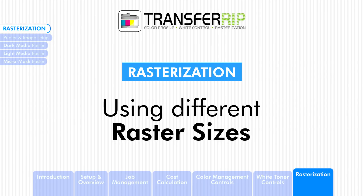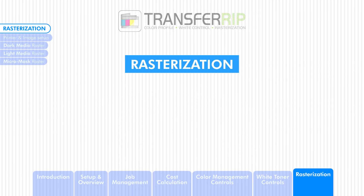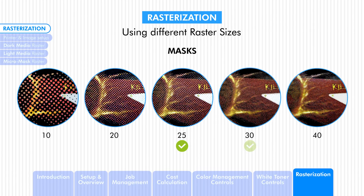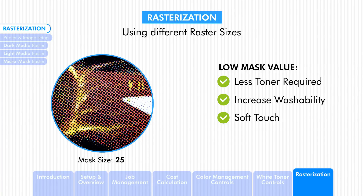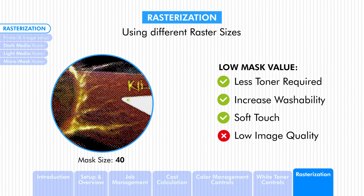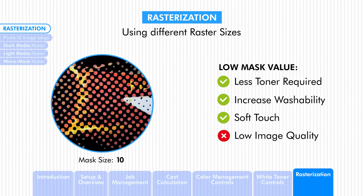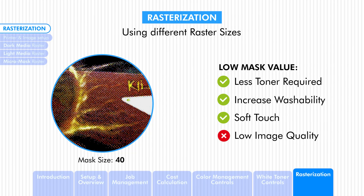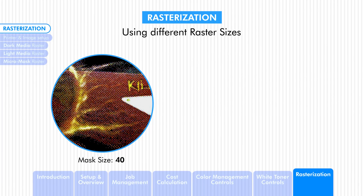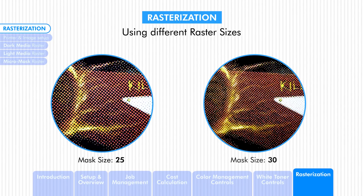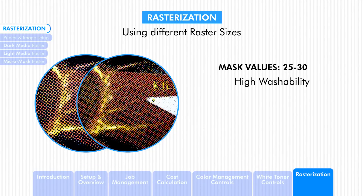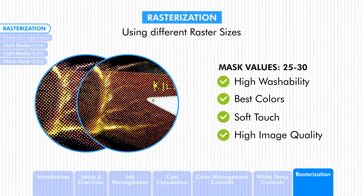Each raster dot shape can be customized using different dot sizes. The standard size we recommend is a mask size between 25 and 30. You can increase washability or soften the touch by using a lower mask size, but the risk is the image becoming unrecognizable — the lower the mask size, the more toner is removed. As the mask size increases, the dots become smaller and image quality improves, but a size of 40 or higher makes the image harder, less washable, and uses more toner. Using a mask size between 25 and 30 maximizes washability, produces the best colors, softens the image, and keeps image quality high while saving toner.